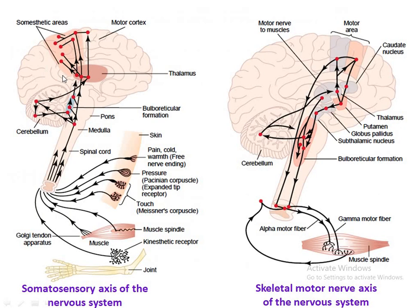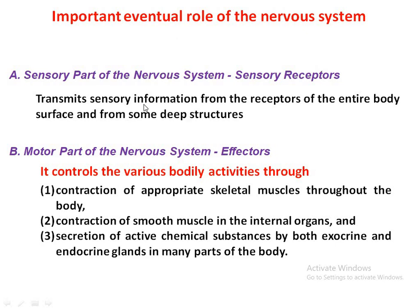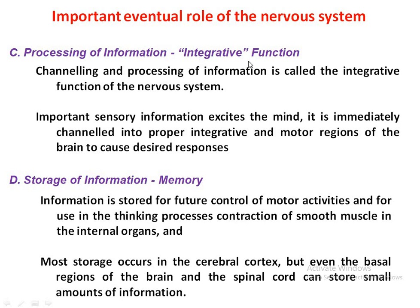We have already discussed the sensory and motor functions of the nervous system. Next is the processing of information — that is, the integrative function. The integrative function is one of the most important functions of the nervous system, as it is responsible for taking decisions about sensory input. Once important sensory information excites our mind, it is immediately channeled to the proper integrative part of the nervous system and the motor regions of the brain to cause a desired response. The central nervous system also plays an important role by storage of information received by the sensory parts, which can be stored for future control of motor activities and for the thinking process.